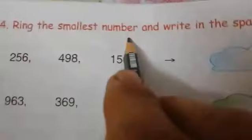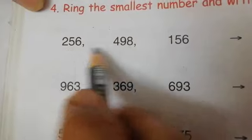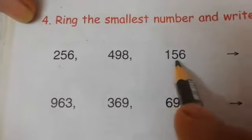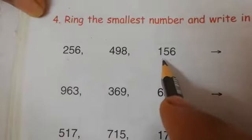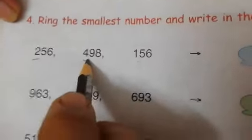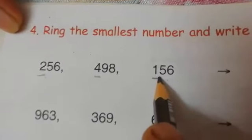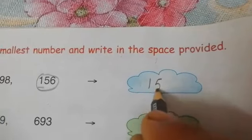Question number 4: ring the smallest number and write it in the space provided. Read the numbers. 256, 498 and 156. Now we have to ring the smallest number. First we will check hundreds: 200, 400 and 100. Which hundred is smallest? 1. Then first we will ring and after that we will write the number here.